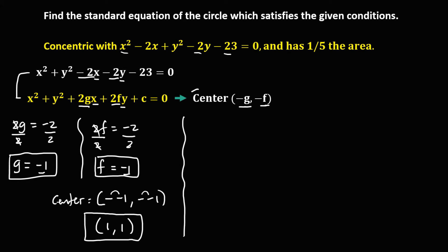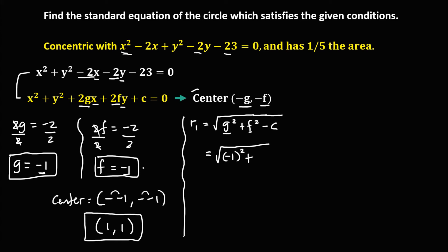To solve for the radius from the given equation of a circle, we call this r sub 1. Using the formula, the radius equals the square root of g squared plus f squared minus c. Substituting the values: g is negative 1, f is negative 1, and c is negative 23.